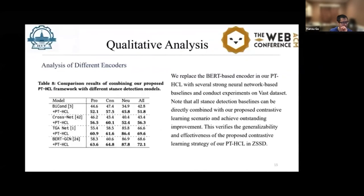We also analyze the impact of different encoders. We replace the BERT-based encoders in our PTSDL with several strong neural network-based baselines, showing that all stance detection baselines can be directly combined with our proposed contrastive learning scenario and achieve outstanding improvement. This verifies the generalizability and extensibility of the proposed contrastive learning strategy of our PTSDL in few-shot settings.